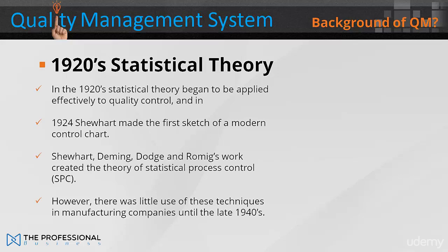In the 1920s, statistical theory began to be applied effectively to quality control, and in 1924, Shewhart made his first sketch of a modern control chart. His work was later developed by Deming, and the early work of Shewhart, Deming, Dodge and Romig constitutes much of what today comprises the theory of statistical process control. However, there was little use of these techniques in manufacturing companies until the late 1940s.